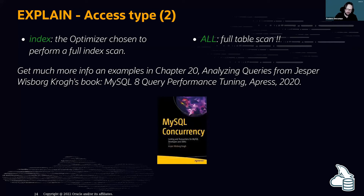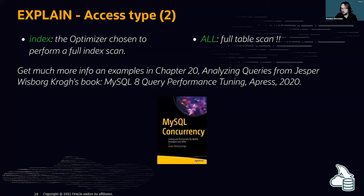For examples of each access type, Chapter 20 of 'Analyzing Queries' from Jesper Wisborg Krogh — 'MySQL 8 Query Performance Tuning', Apress 2020 — is another book I encourage you to check if you are looking to do query optimization in MySQL.